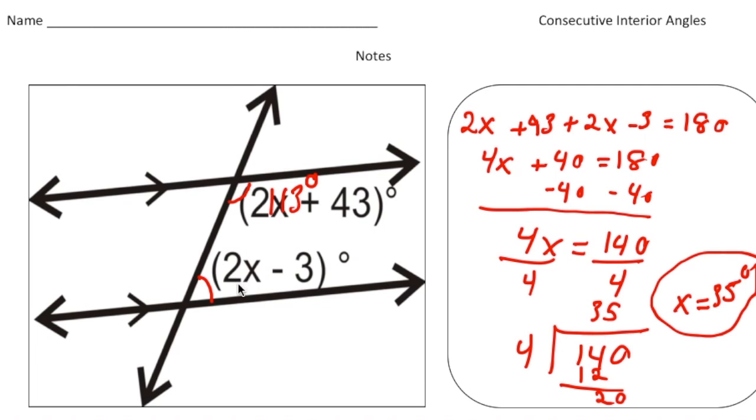And then if I plug in 35 for this x, 2 times 35 is 70, and 70 take away 3 gives us 67 degrees. And guess what? If I add up 113 plus 67, that gives us 180, which is supplementary. So now that you understand the rules about consecutive interior angles, pause the video and try your turn problem now. And then when you're done, hit play and you can see how you did. Good luck.